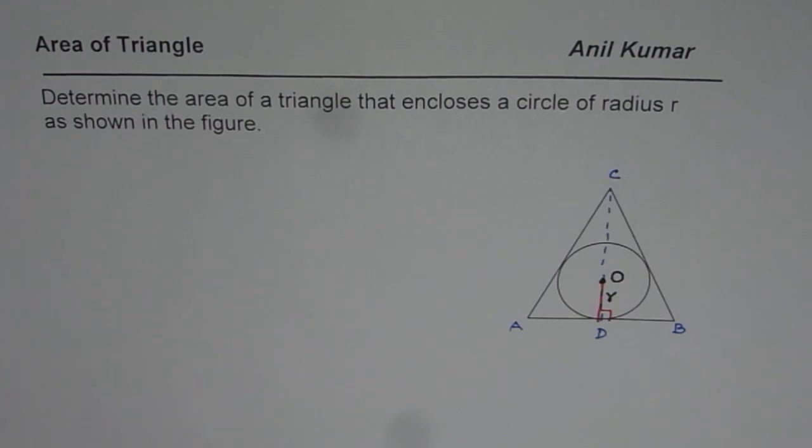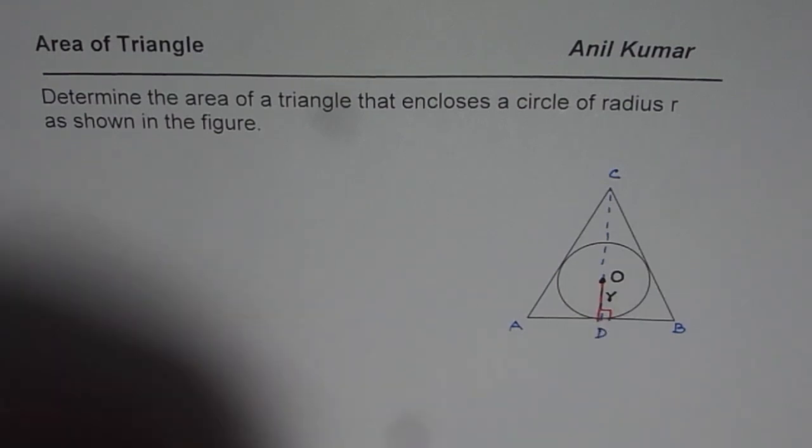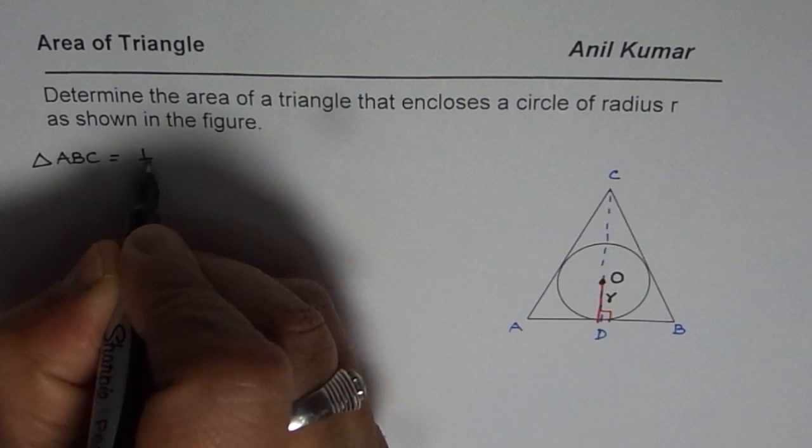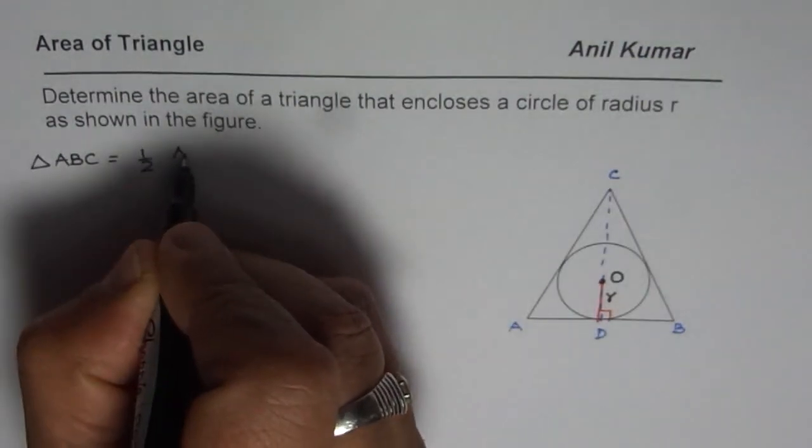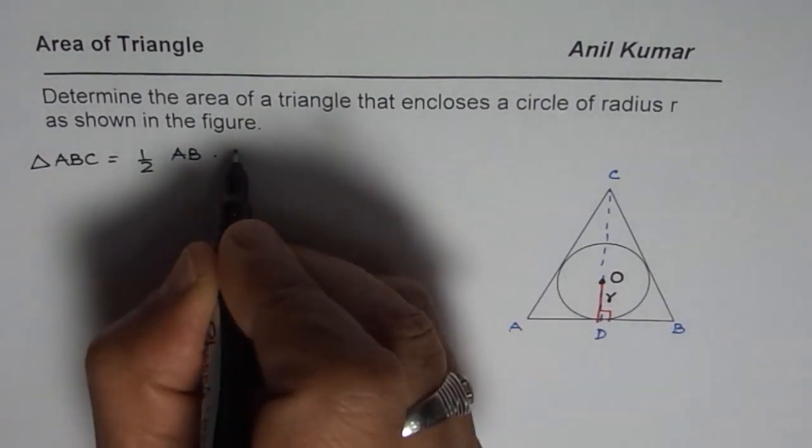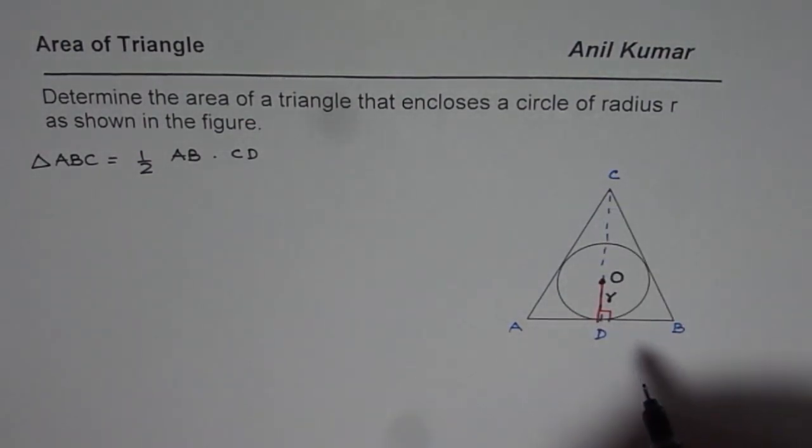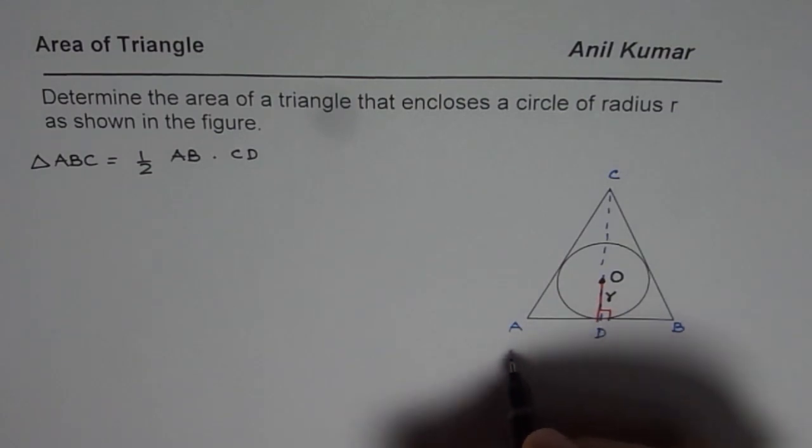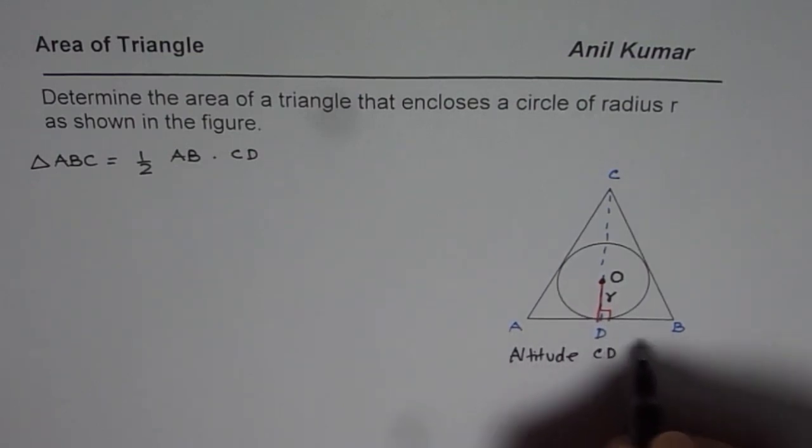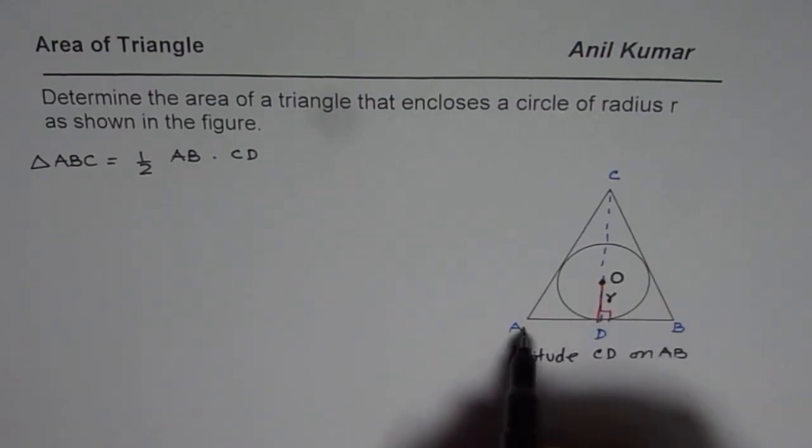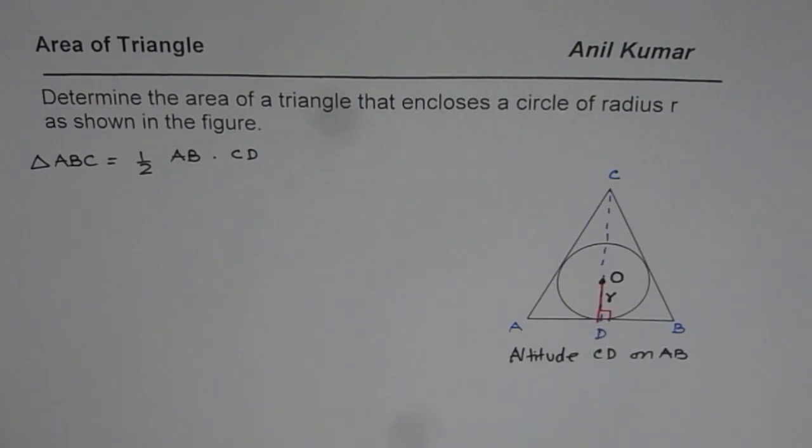Now how can we find the area of the triangle? Area of a triangle ABC is actually equals to half base which is AB times height which is CD. So the construction which we have done here is we have dropped a perpendicular, so we have altitude CD right on AB. Now how to find relation between R, base and the height, that is the real question.